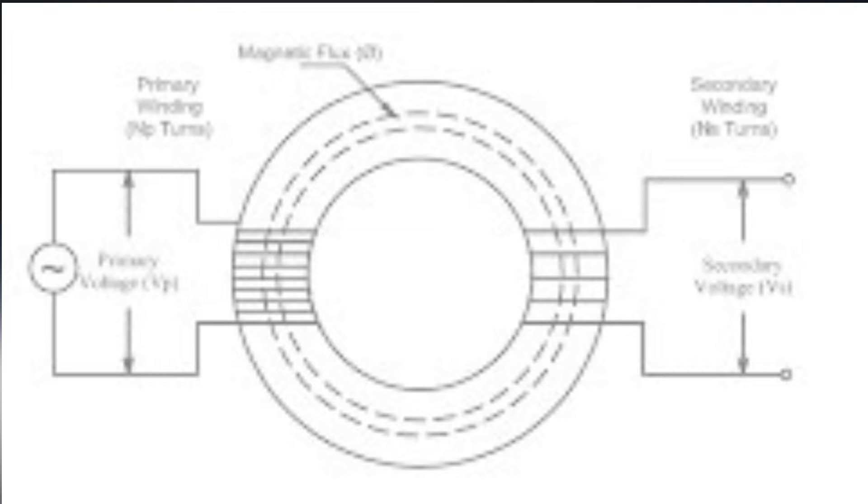It's important to understand that these windings aren't just thrown onto the core haphazardly. They're carefully wound around the core in separate layers, with insulation between them to prevent electrical shorting. This winding process is key to the transformer's performance and efficiency.